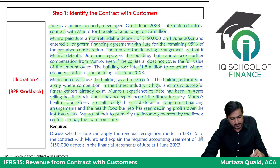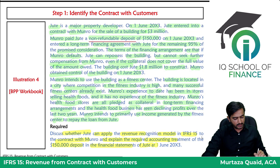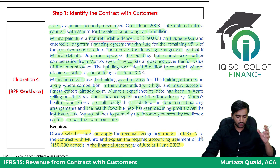The requirement is: apply the IFRS 15 revenue recognition model to the contract with Munro and explain the required accounting treatment of the 150,000 dollar deposit in the financial statements of Jute at 1st June 2003. We need to determine whether the IFRS 15 revenue recognition model can be applied, and how to account for the deposit.